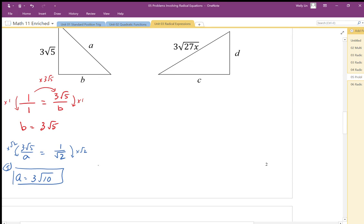Some of you may have chosen to solve this algebraically, solve for A algebraically. You need to times both sides by A, and divide both sides, or sorry, multiply both sides by root 2. So we end up with root 2, 3 root 5 is equal to 1 times A. So A is equal to 3 root 10. That would be an alternative method.